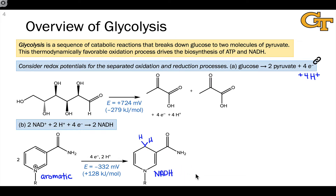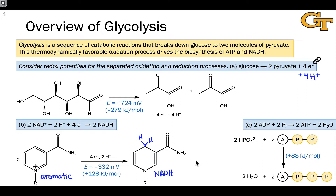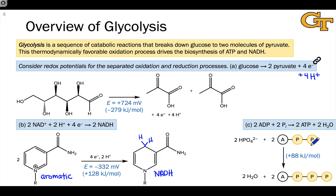The third process to consider is the union of a phosphate group and ADP to form ATP and water. From our prior discussions of bioorganic phosphorus chemistry, it should be clear that this is a disfavored process — the reaction wants to go the other way. The hydrolysis of ATP to form ADP and phosphate is heavily thermodynamically favored. For two molecules of phosphate joining with two molecules of ADP, the total free energy change is about positive 88 kilojoules per mole.